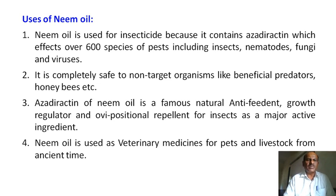What are the uses of neem oil? Neem oil is used as an insecticide because it contains azadirachtin, which affects over 600 species of pests including insects and viruses. It is completely safe to target beneficial organisms — for example, honeybees are not affected by neem oil.